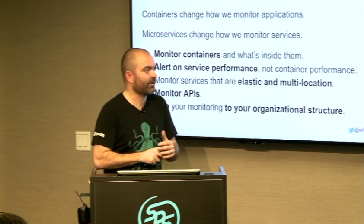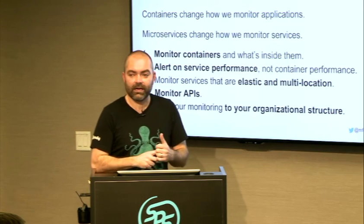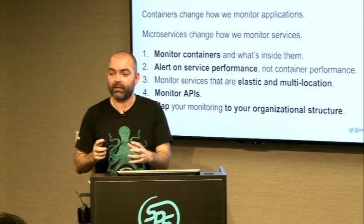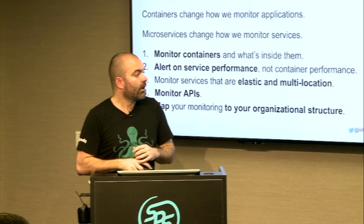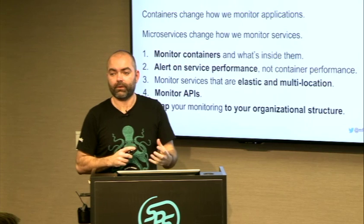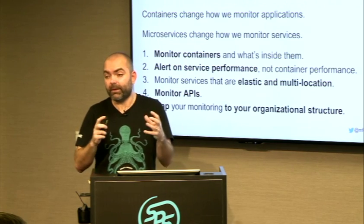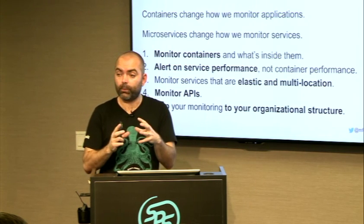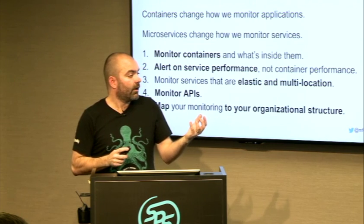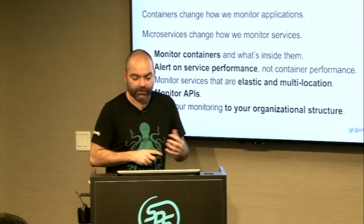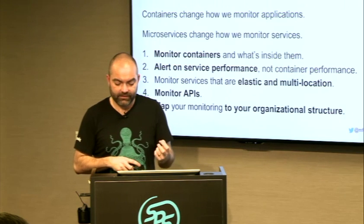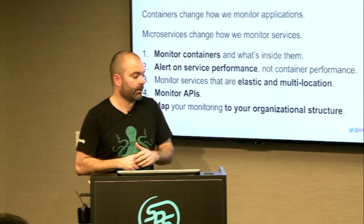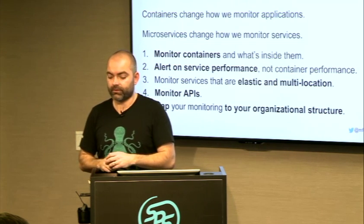To sum up: containers change how we monitor applications and how we think of the unit of compute. Microservices also change how we monitor services — smaller, well-defined scope in what they do. The five principles of monitoring microservices: monitor containers; alert on service performance; take into account elasticity and multi-location; monitor APIs, which is the most important and compelling part; and map monitoring to your organizational structure. With that, I'll be happy to take some questions.